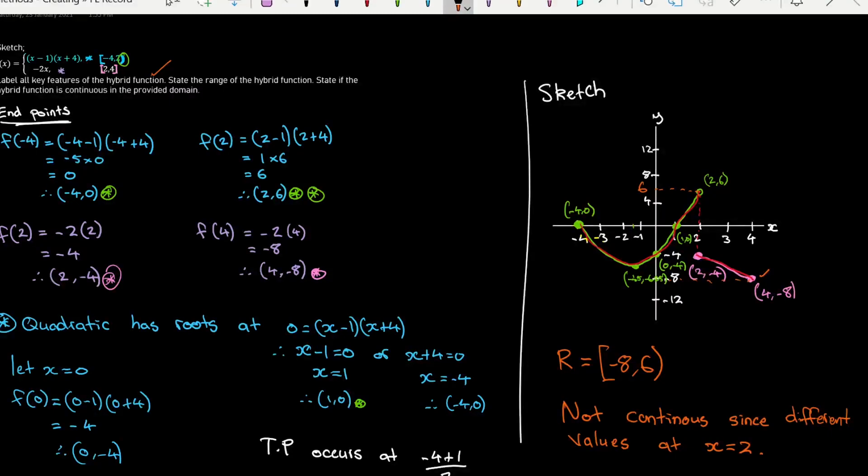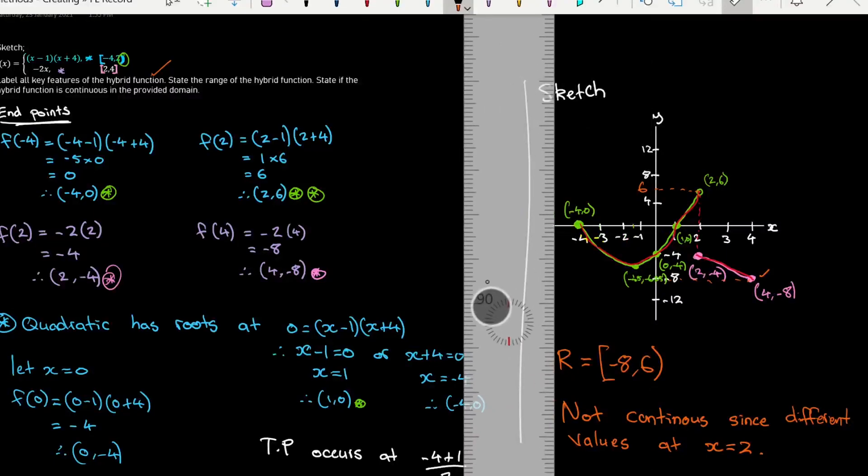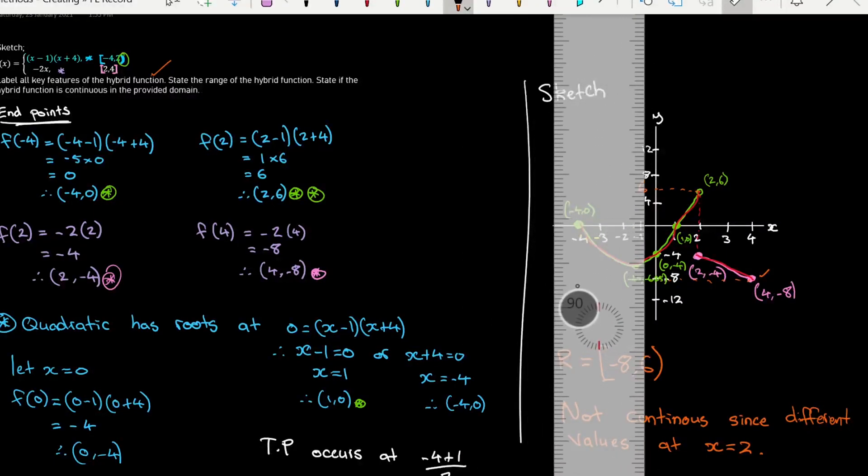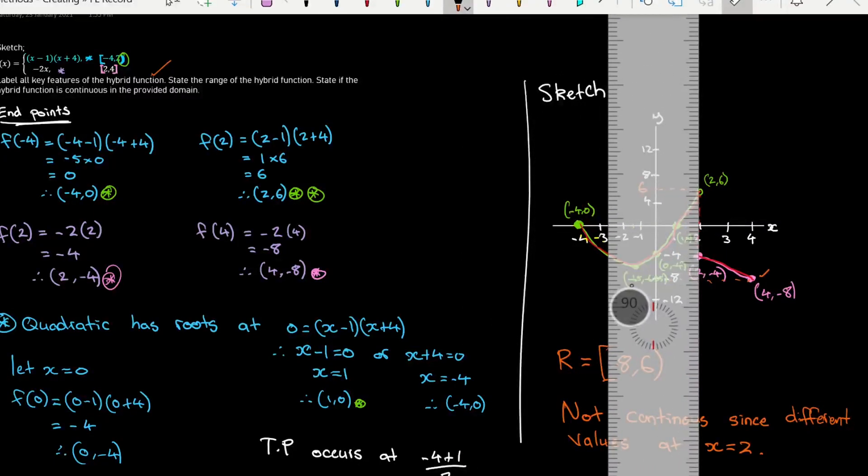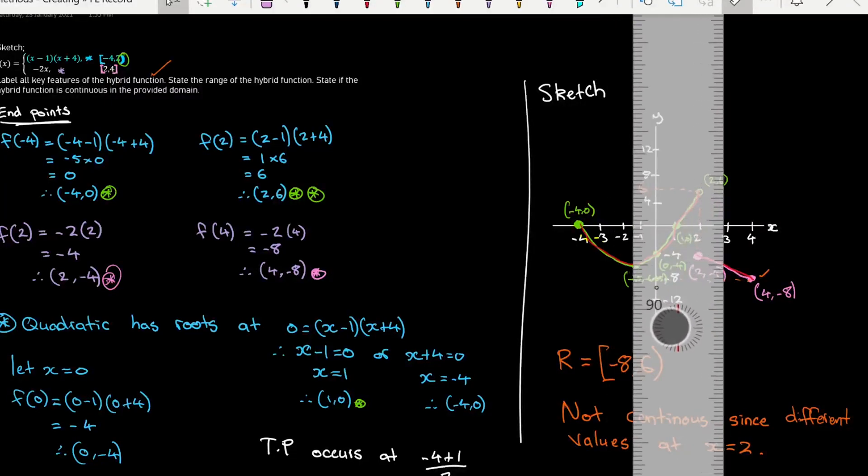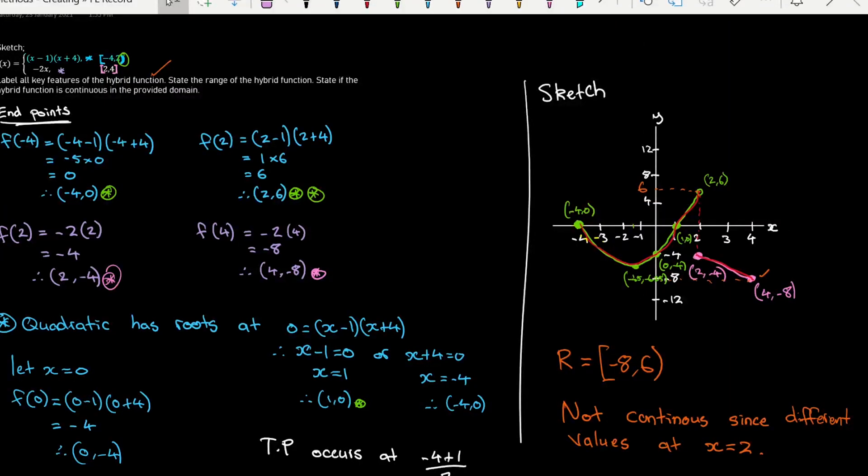Now I'd actually say it is a function, because it actually does pass the vertical line test. And then when you get to this point at x equals 2, you're actually not touching the function on the quadratic, because the quadratic doesn't include the point x equals 2. So it's still a function. It doesn't break the vertical line test. It's just not a continuous function, because all of the y points don't match up. So that kind of breaks continuity.